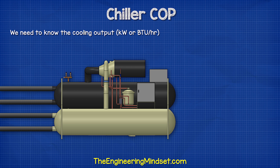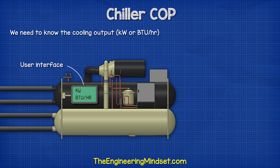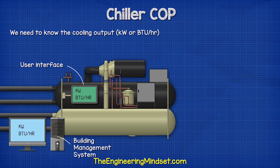The second part you will need to know is how much cooling you are getting out of the chiller evaporator. Ideally, this will also be in kilowatts, which makes it much easier, but you can also use BTUs for the imperial calculation as we'll simply convert this. This value should also be available from the chiller's user interface or from the building management system.